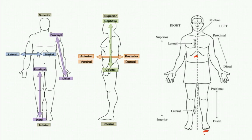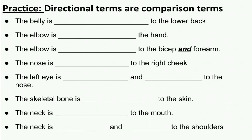Remember, directional terms are comparison terms — they don't really work unless you're comparing one part of an organism's body to a different part. Try going over these different examples and make some guesses on what you think the answers will be before I go over them. Keep in mind that a lot of terms may have more than one acceptable word — for above, you might use cephalic, cranial, or superior, as many words are interchangeable.